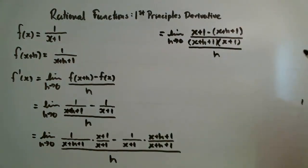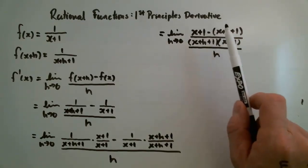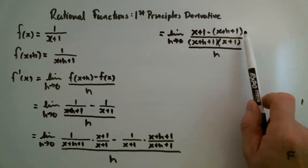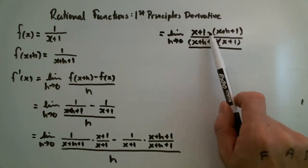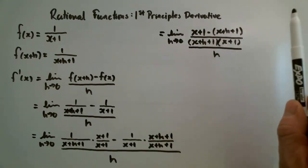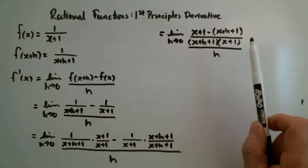Now I'm ready to simplify my top. I can see I have x minus x and 1 minus 1, and this is going to leave me with a negative h in the top of the top fraction and an h on the bottom.